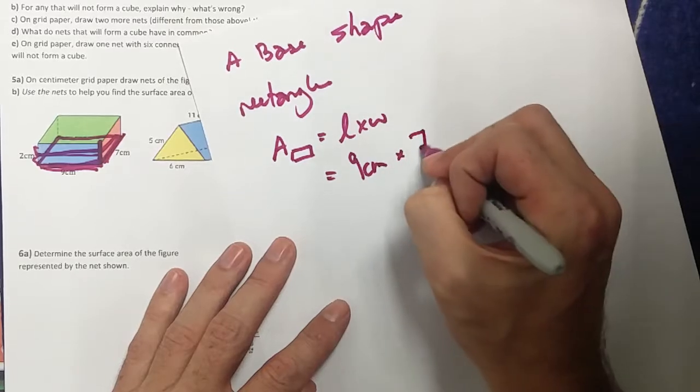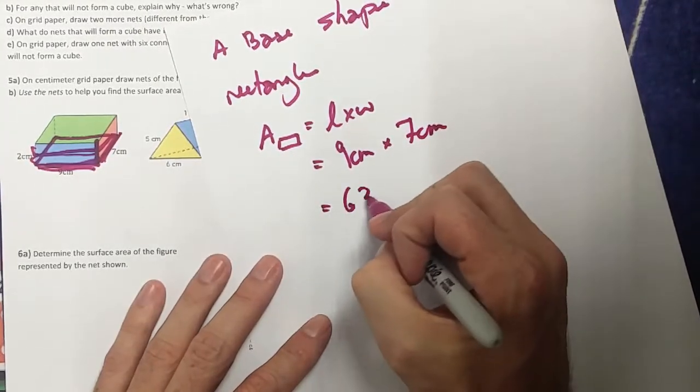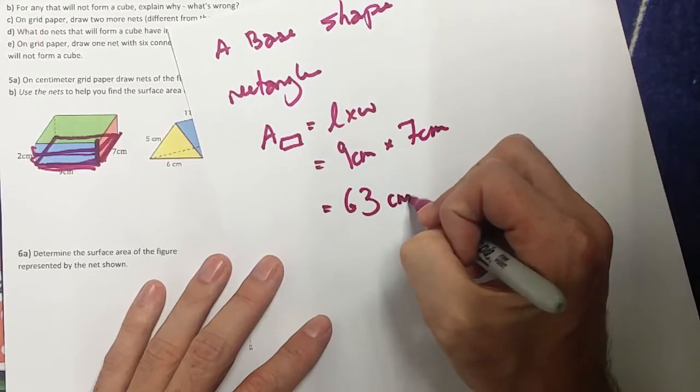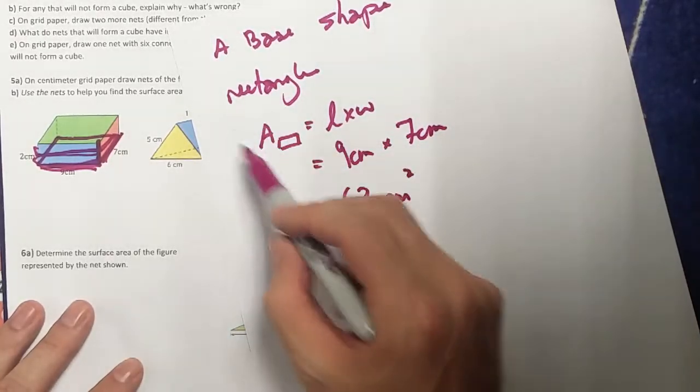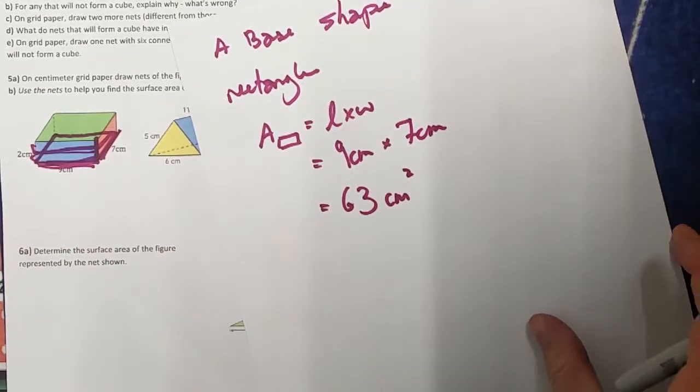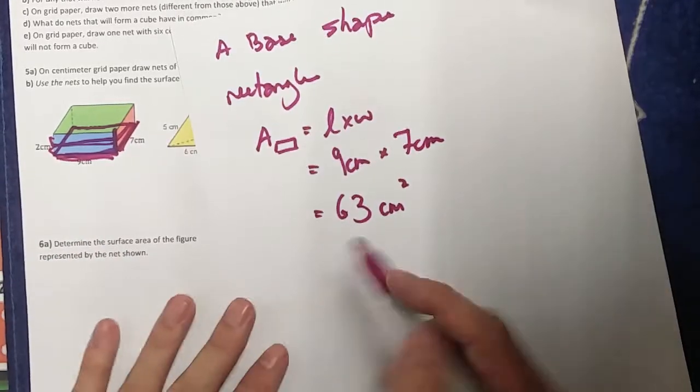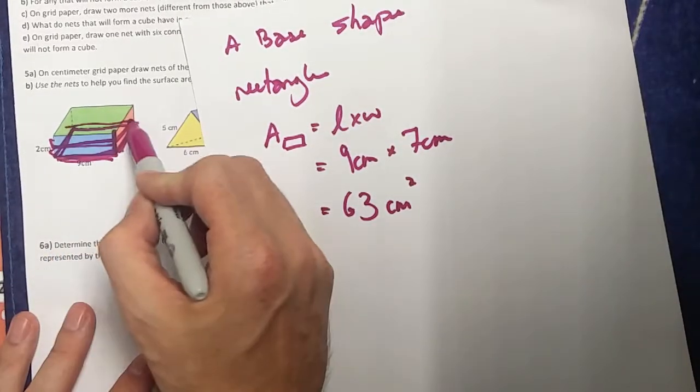Length and width in this example here is nine centimeters times seven centimeters. Nine times seven, nine times seven, of course, is 63. And centimeters squared. Now again, remember it's centimeters squared because I'm finding the area, the number of squares inside that 2D shape.